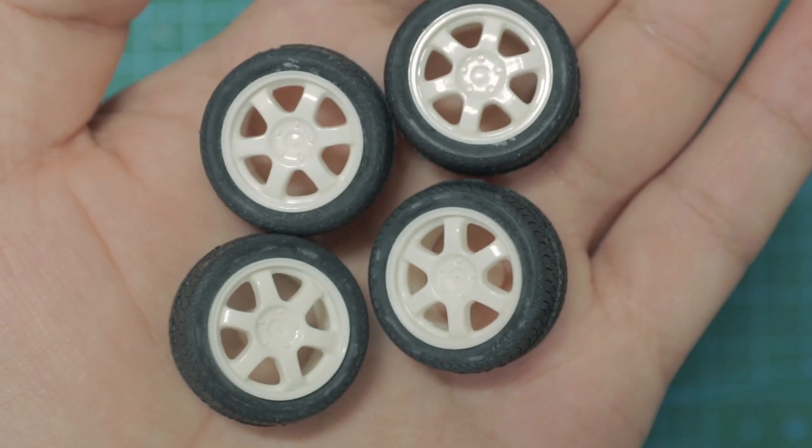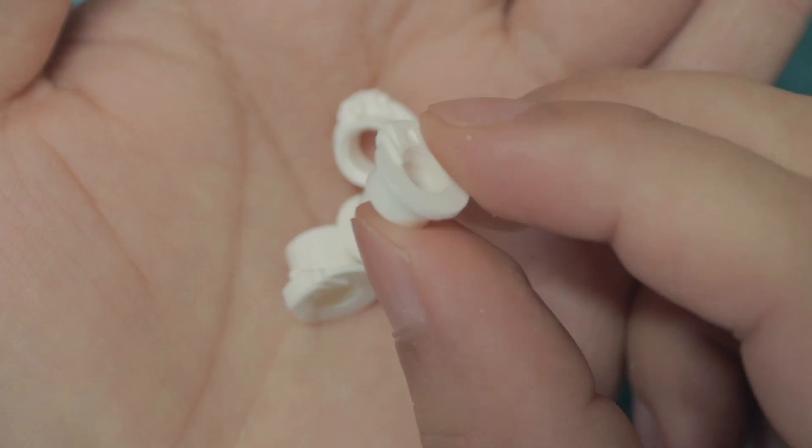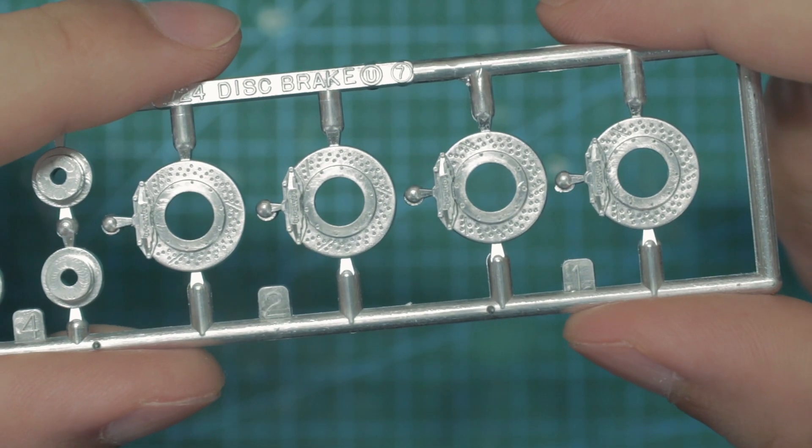The Type R wheels are good looking, but I'm going to be putting on a set of TE37 from another kit. The brakes are also getting replaced by some Brembo brakes, also made by Fujimi.